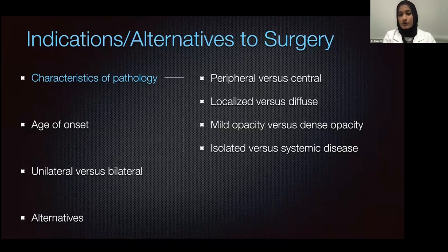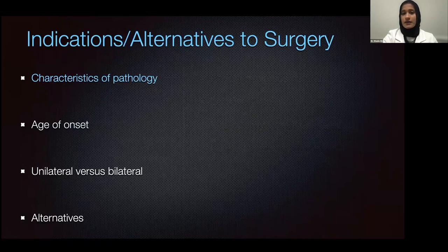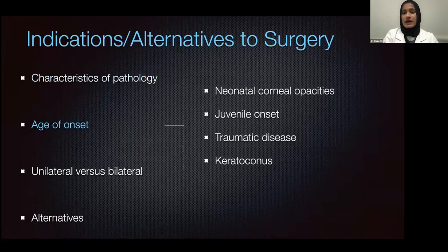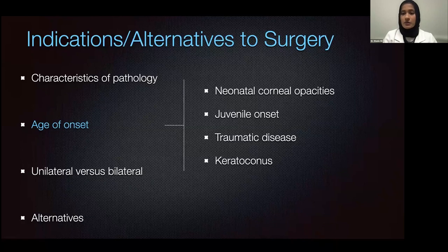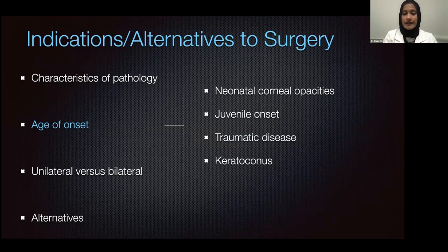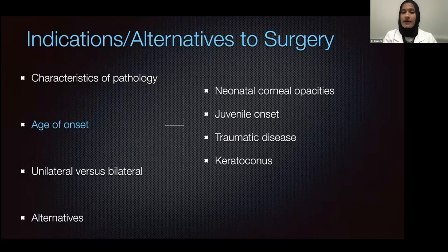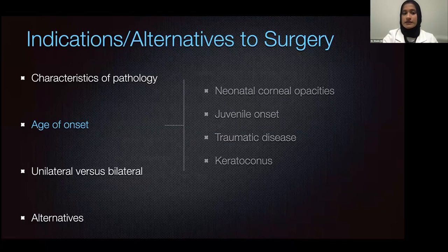Looking at the age of onset: neonatal corneal opacities tend to be congenital in nature and have some type of genetic association. The juvenile-onset patients will do a little bit better because they've passed that amblyogenic age range. If there's trauma, that can also affect what type of surgery and when to do it. And later on in life, pediatric patients can develop keratoconus, which has a different set of associated surgeries to consider.